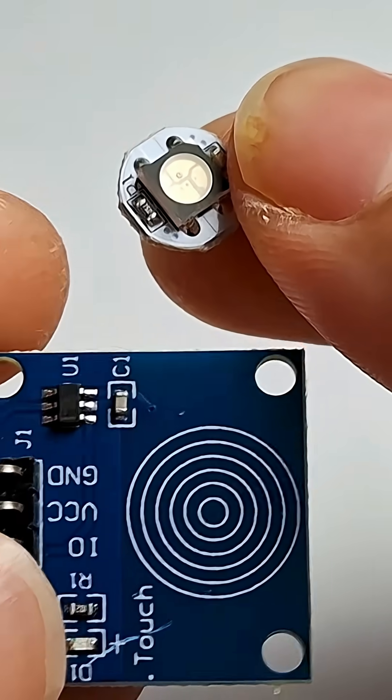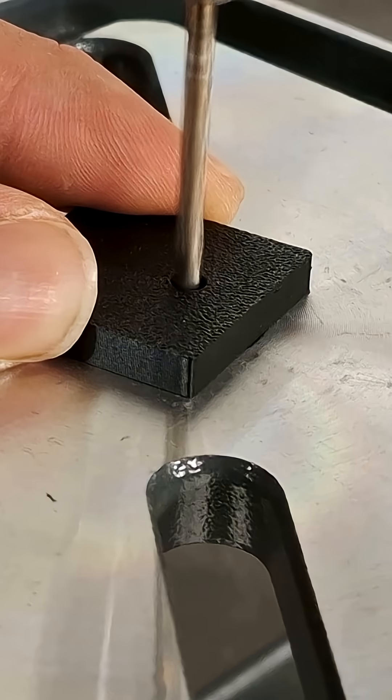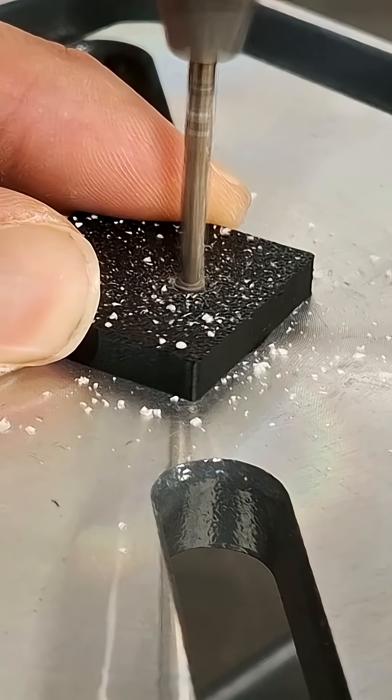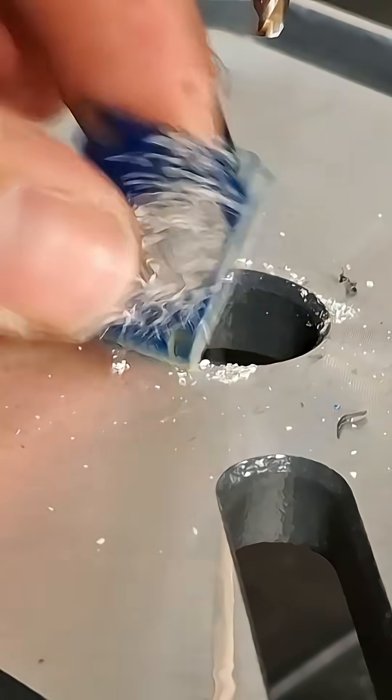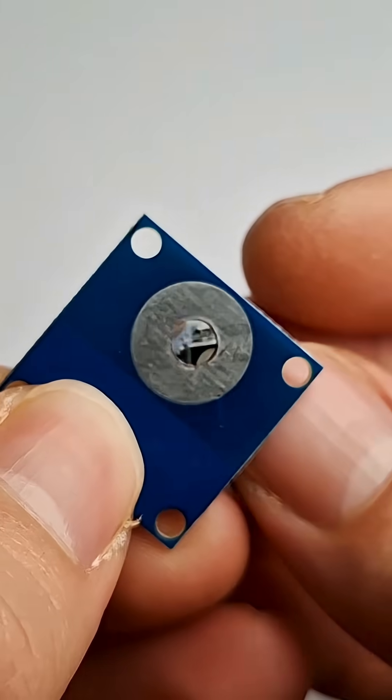What that means is that we can take one of these off-the-shelf boards and drill a hole right through the center of the electrode to allow light from our LED to shine through.